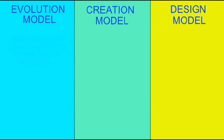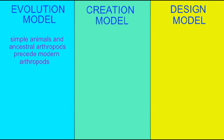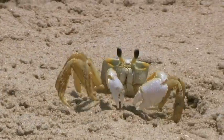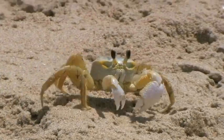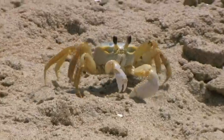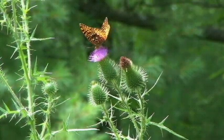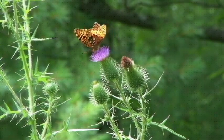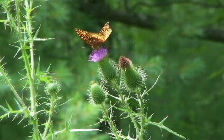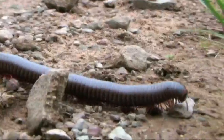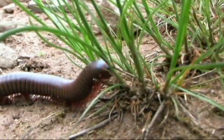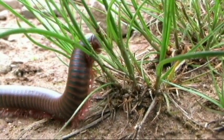If the evolutionary model is true, then modern arthropods haven't always existed. In the fossil record, long before there are modern groups of arthropods—such as lobsters, crabs, crayfish, insects, and spiders—there should be intermediate forms: non-arthropods which gradually acquire arthropod features, and primitive arthropods not alive today. Modern arthropods, however, should not be present from the earliest rock layers.